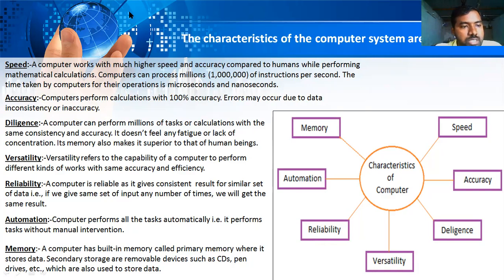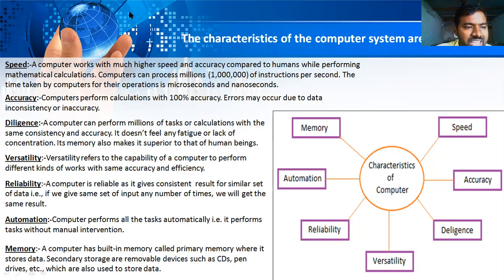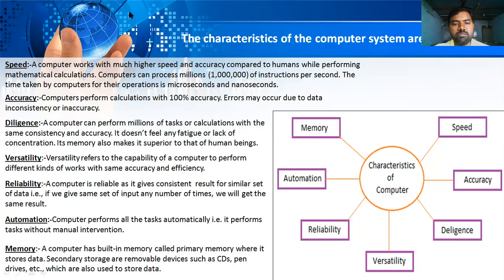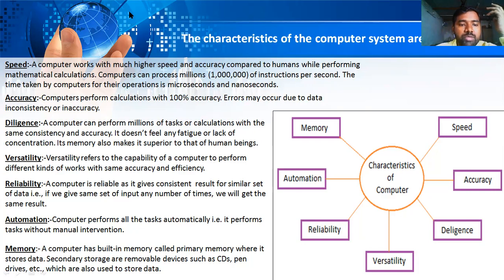Diligence means a computer can perform millions of tasks or calculations with the same consistency and accuracy. It does not feel fatigue or lack of concentration. Its memory also makes it superior to human beings. Versatility refers to the capacity of a computer to perform different kinds of work with the same accuracy and efficiency.